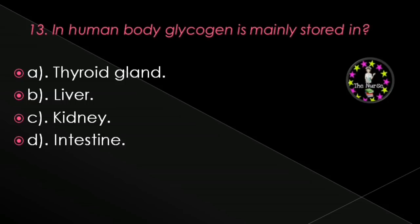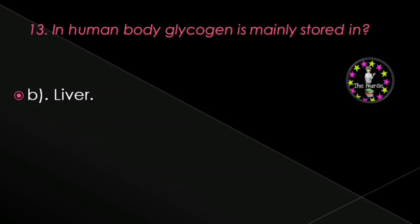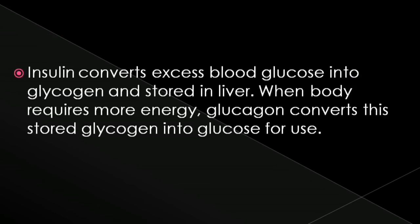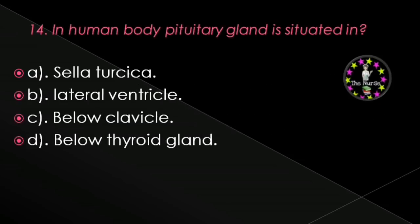Next question: In the human body, glycogen is mainly stored in — thyroid gland, liver, kidney, or intestine? Correct answer is liver. Insulin converts excess blood glucose into glycogen and stores it in the liver. When the body requires more energy, glucagon converts the stored glycogen into glucose for use.